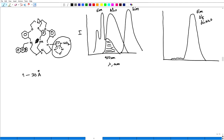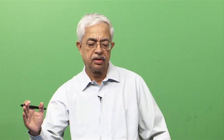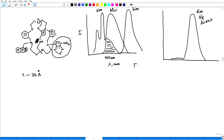This is called FRET. Earlier it used to be called fluorescence resonance energy transfer, but Förster is a scientist who did a lot of work with this, so now it is called Förster Resonance Energy Transfer, or in short, FRET. FRET is a very important technique for biochemists and molecular biologists — a very important fluorescence technique to understand the physiology of biological systems.